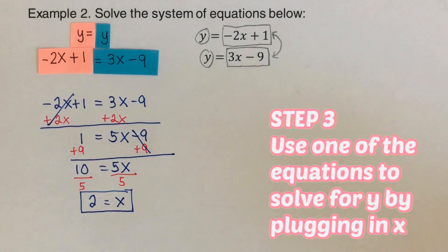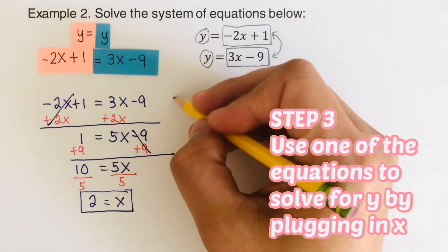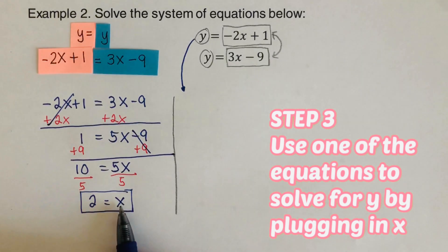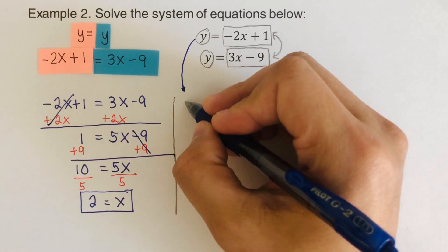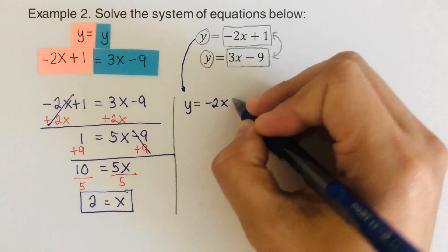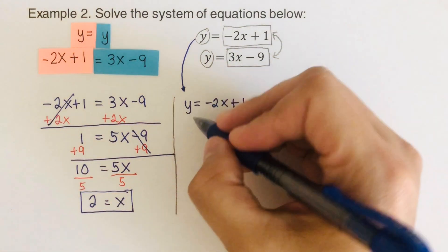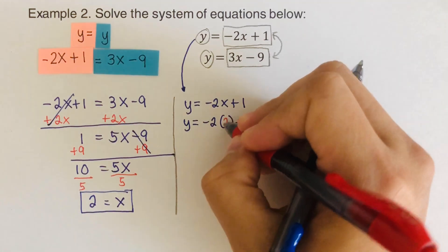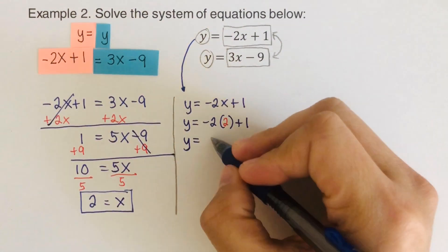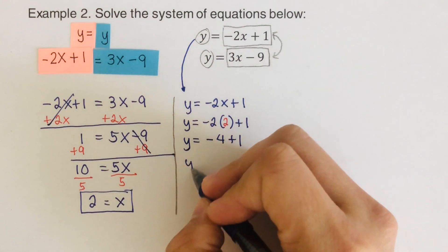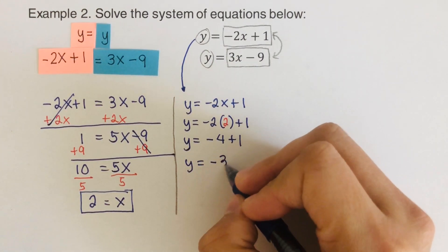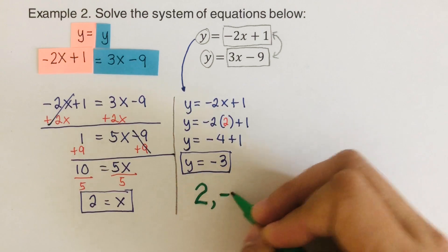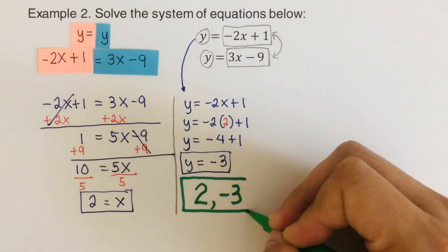The third step is to use one of the equations to solve for y by plugging in x equals 2. Using the first equation, y equals negative 2x plus 1: plugging in gives y equals negative 2 times 2 plus 1, which is negative 4 plus 1, so y equals negative 3. The point of intersection, or the solution, is (2, negative 3).